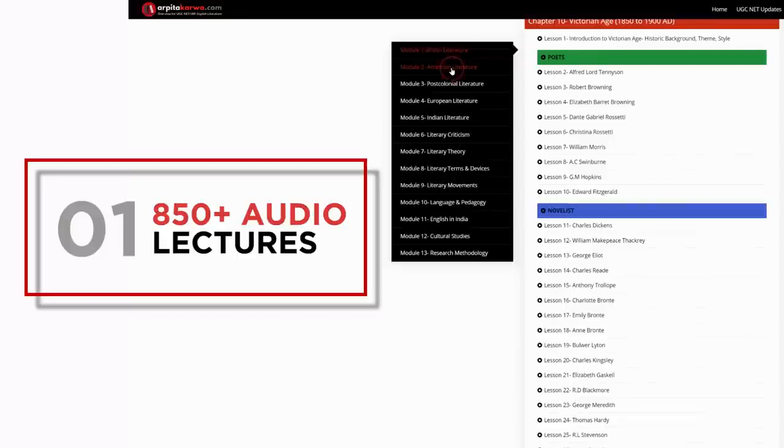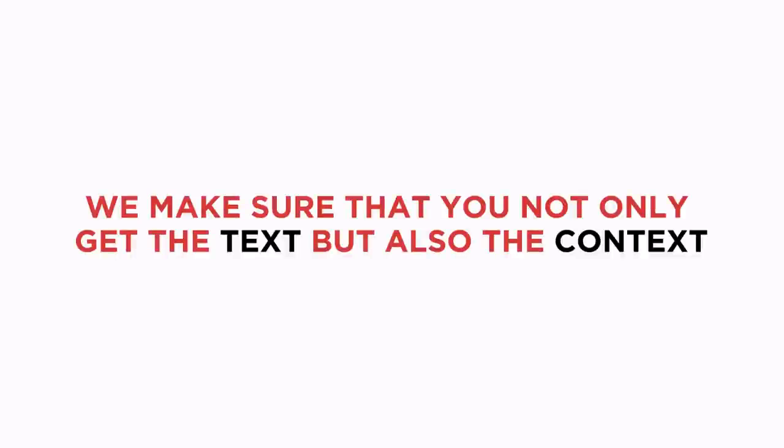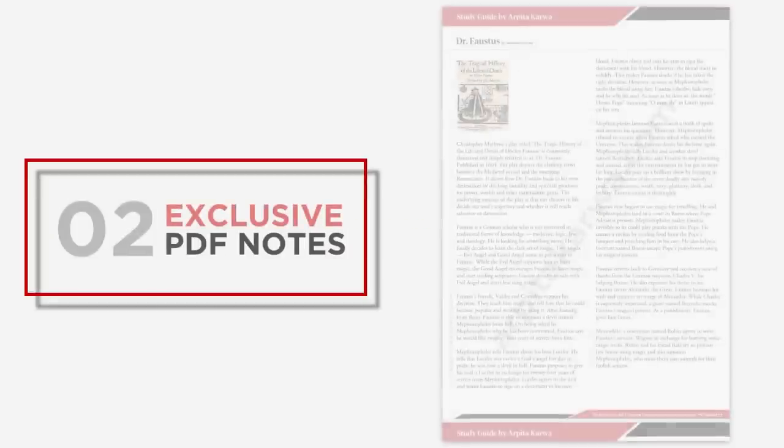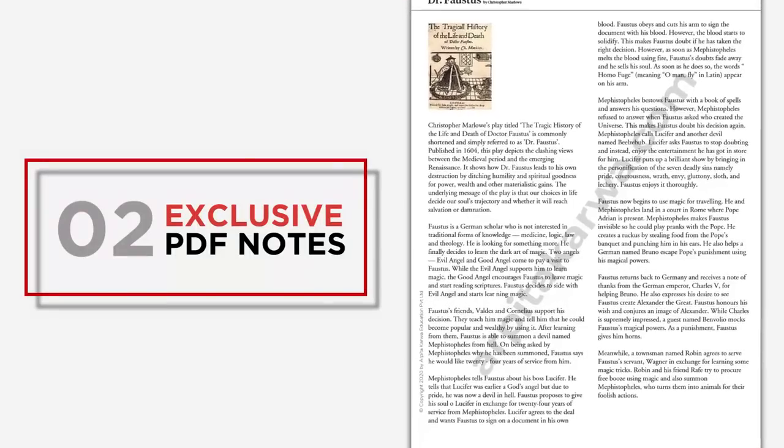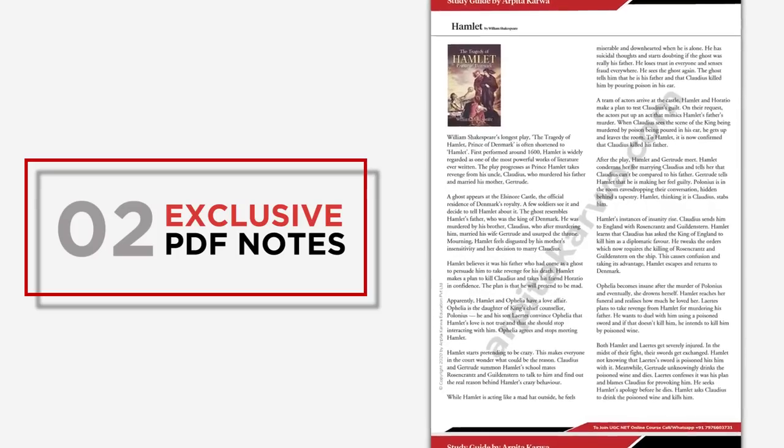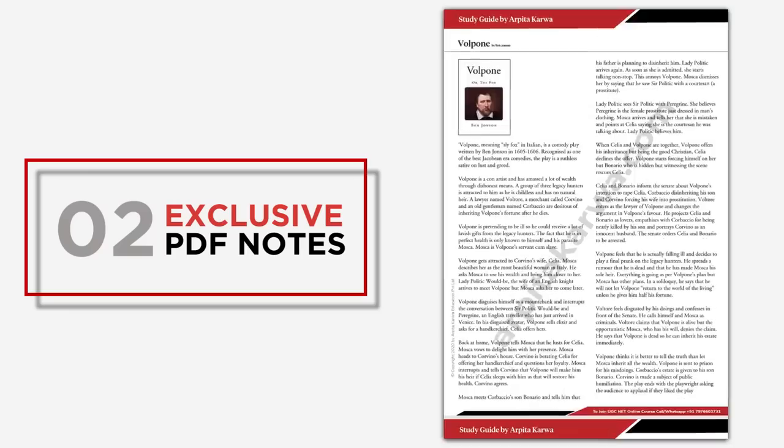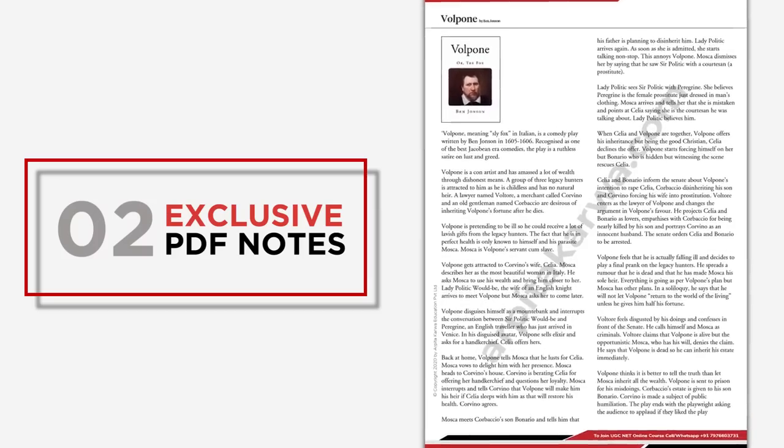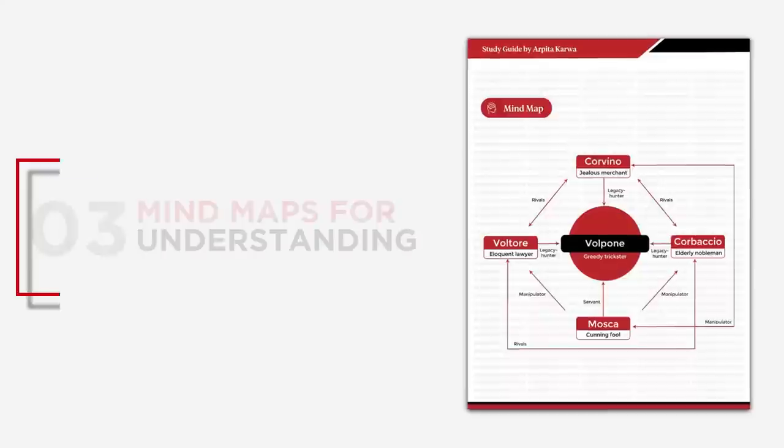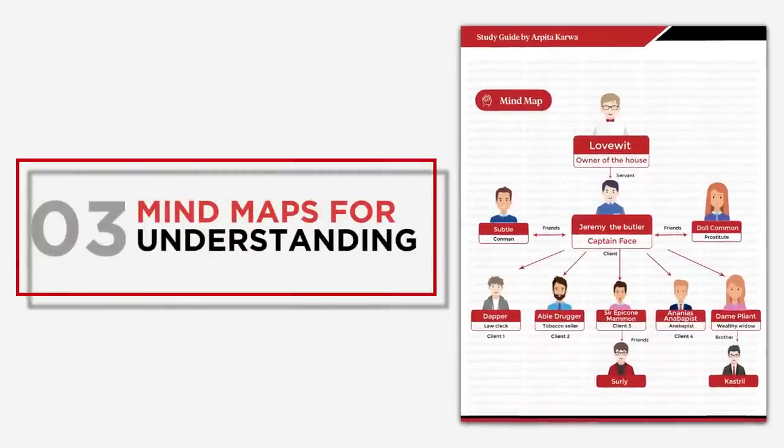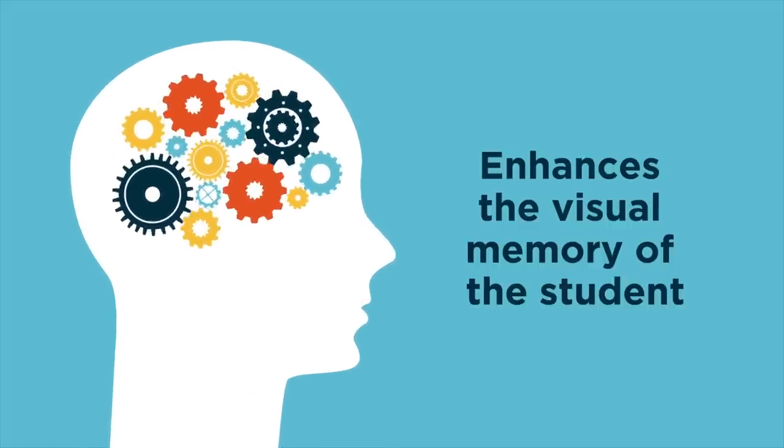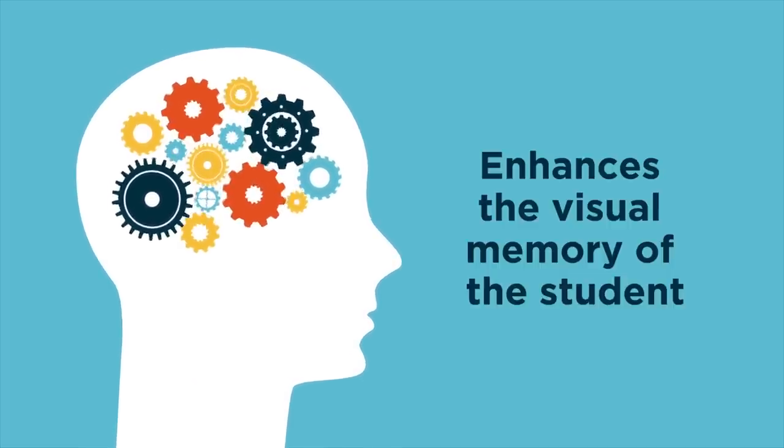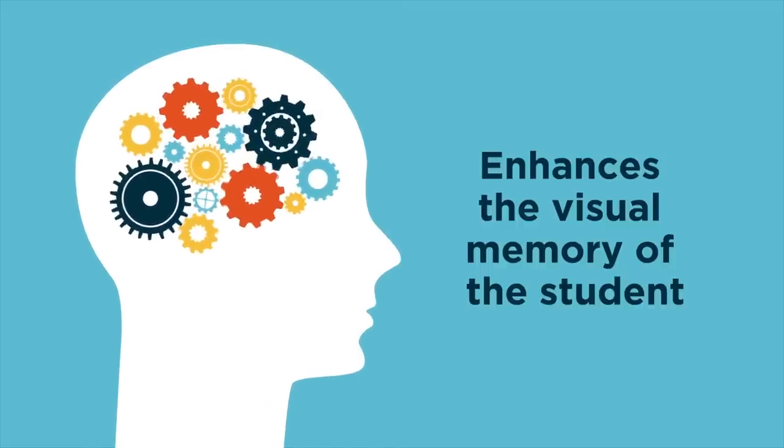In our online course, we make sure that you not only get the text but also the context. To make your preparation super easy, we bring to you 200 plus quick PDF notes and mind maps. Our PDFs are designed by experts to ensure that you can understand complex plots of plays and novels within minutes. Along with PDFs for every important novel and play, we provide you with mind maps that visually depict relationships between characters. These mind maps enhance the visual memory of students so that they are able to recall the plot and characters efficiently during the exam.